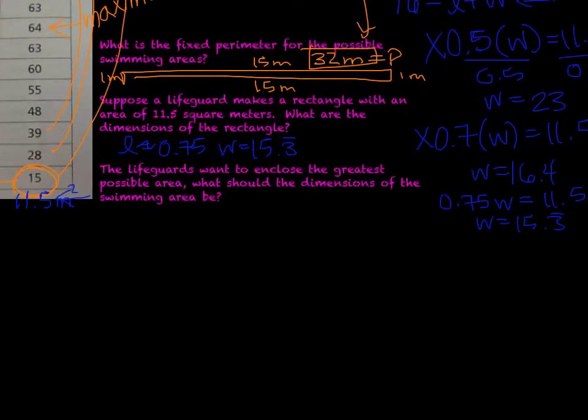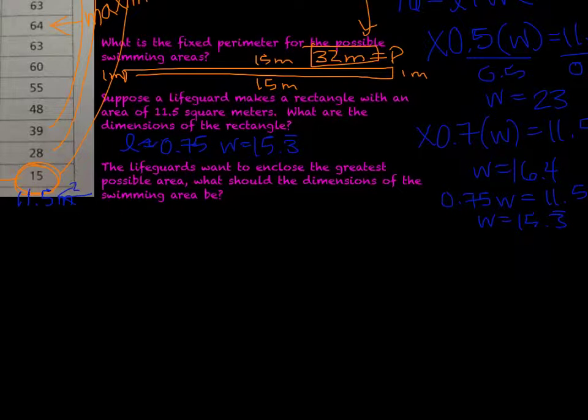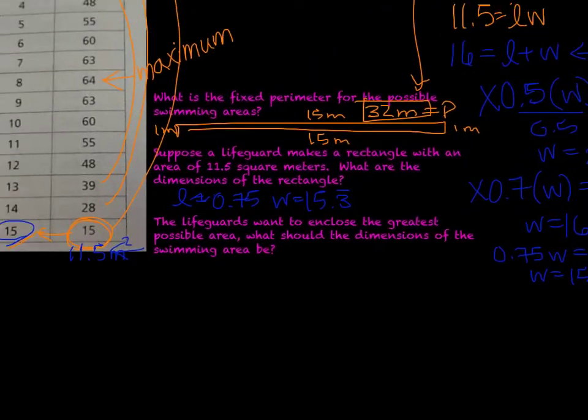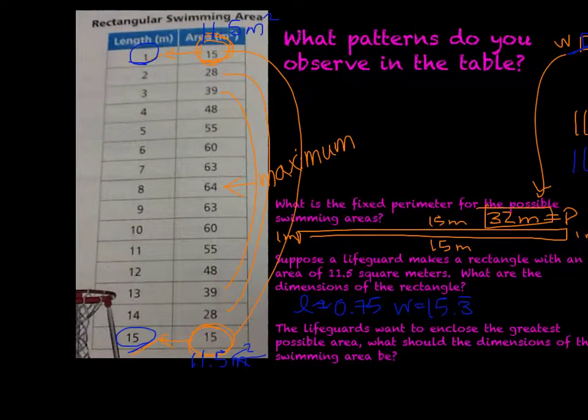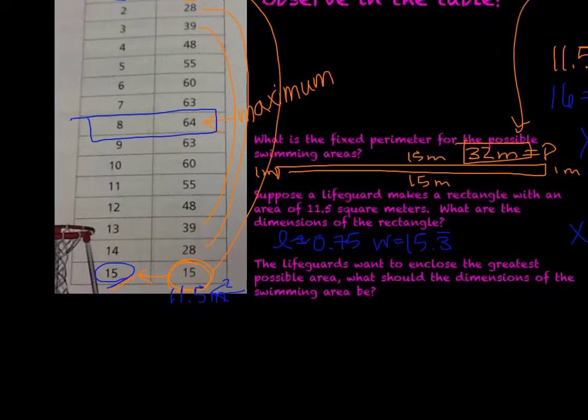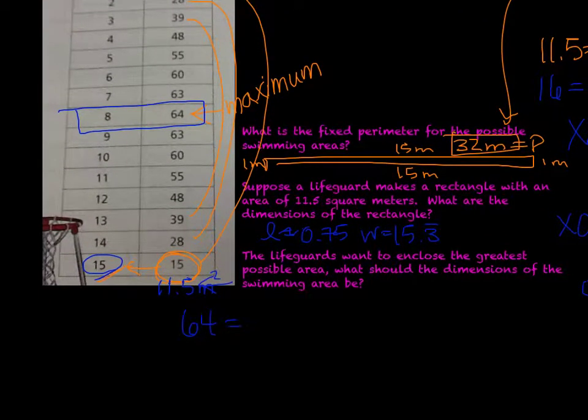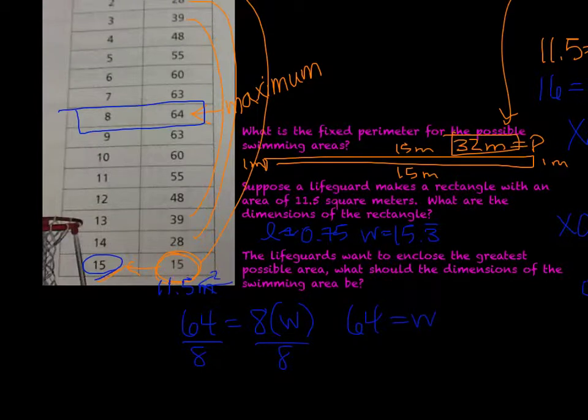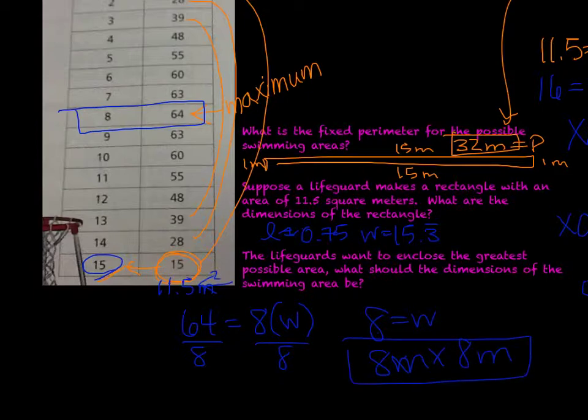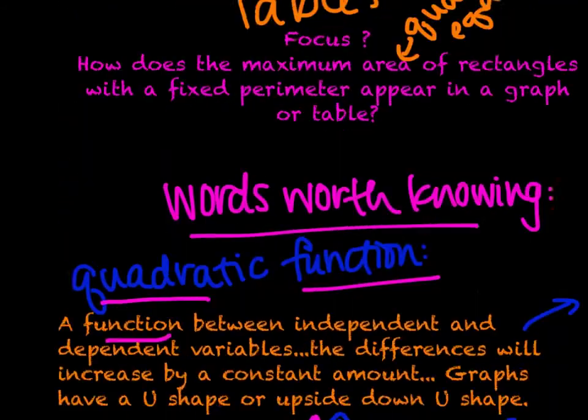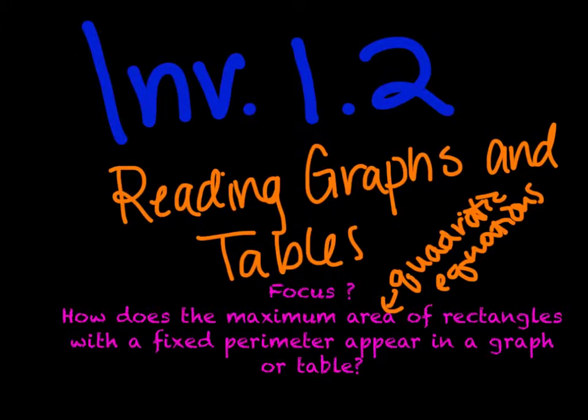The next and last question: the lifeguards want to enclose the greatest possible area. What should the dimensions of the swimming area be? Our maximum area is on that table, right here at 64, and we have one length that's listed which is 8. The dimensions would be 64 as our area equals 8 times the width. We're going to divide by 8, so 8 equals our width. So our dimensions are an 8 meter by 8 meter swimming pool. Work yourself through this investigation. I hope this helps answer some questions for Investigation 1.2. I will see you later. Bye!